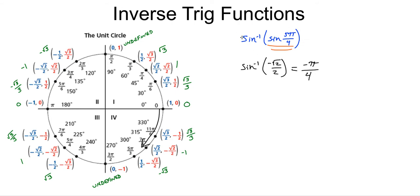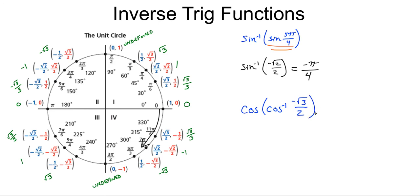When a problem falls outside the parameters, just work from the inside out. For example, the cosine of the inverse cosine of negative root 3 over 2 — since negative root 3 over 2 is between negative 1 and positive 1, this is within the valid range, so the cosine and inverse cosine cancel out, giving simply negative root 3 over 2.